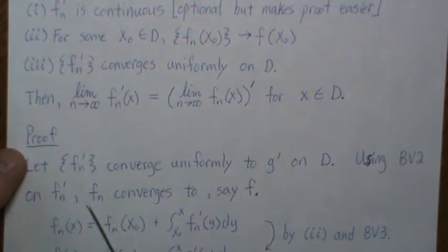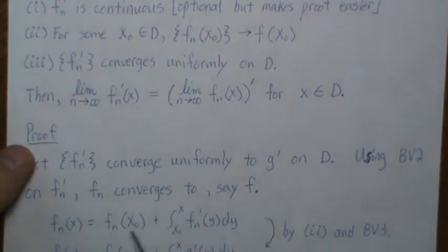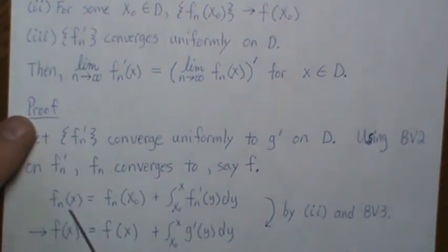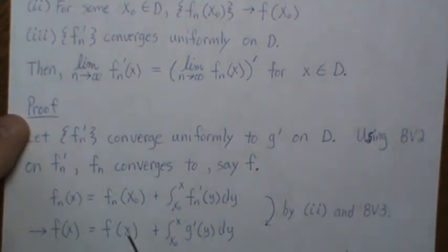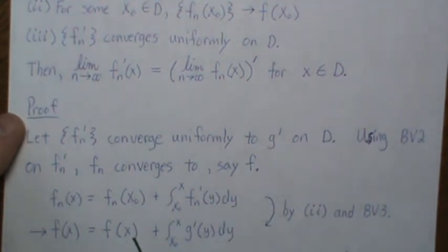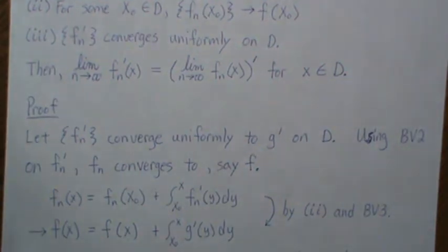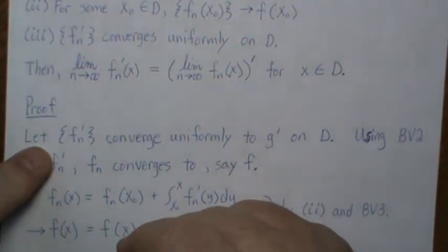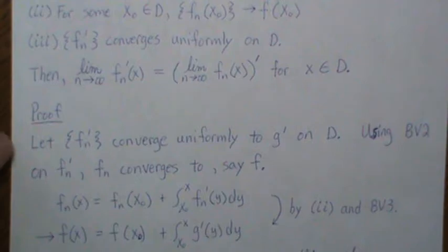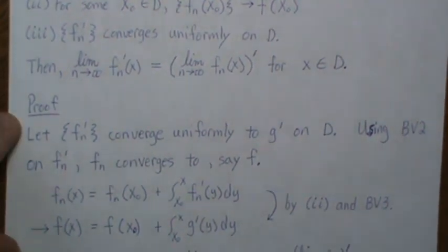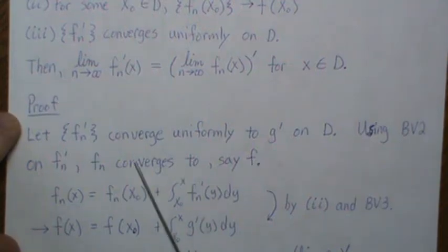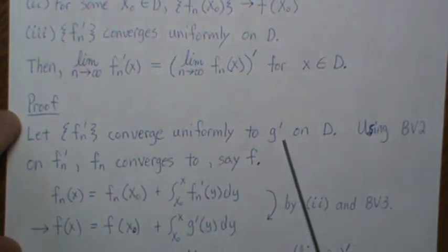Now by this property, f_n converges to f uniformly. So that converges to this, this converges to, and that should be an x_0 right there. Then, by this property that it converges to something, g_0.